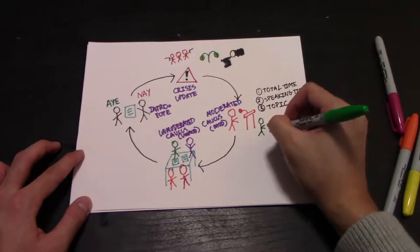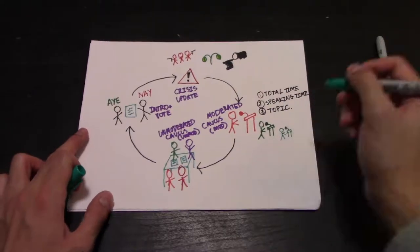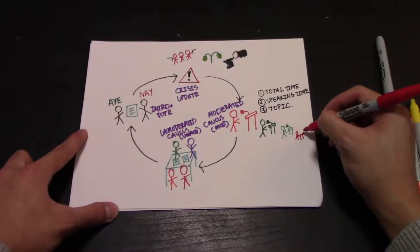If a moderated caucus gets passed by the committee, then delegates will give speeches, one after another, about their views and how they would solve the topic.